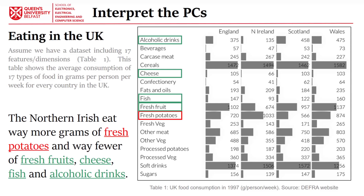When we look at the interpretation of the principal components, we realize that Northern Ireland is really different in food consumption for specific features. For instance, for fresh potato consumption you can see big differences compared to the rest.